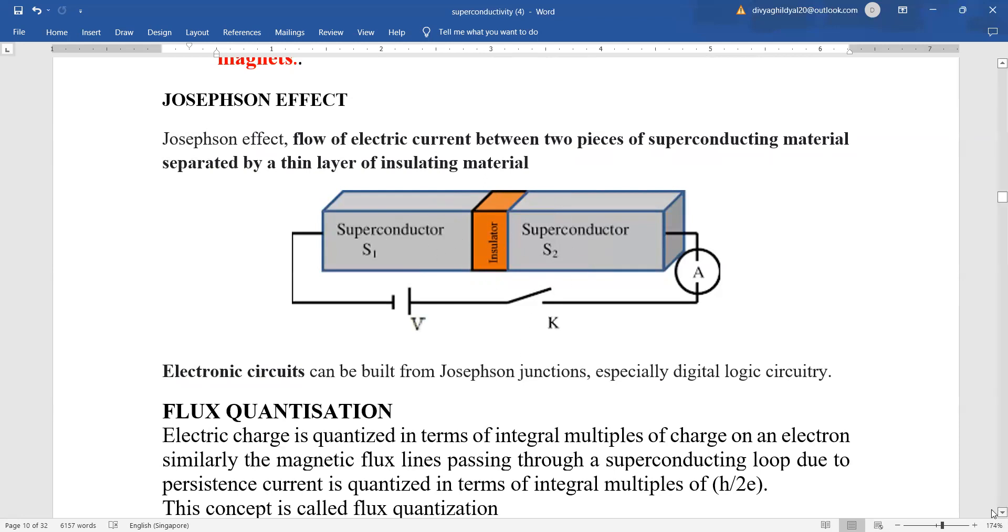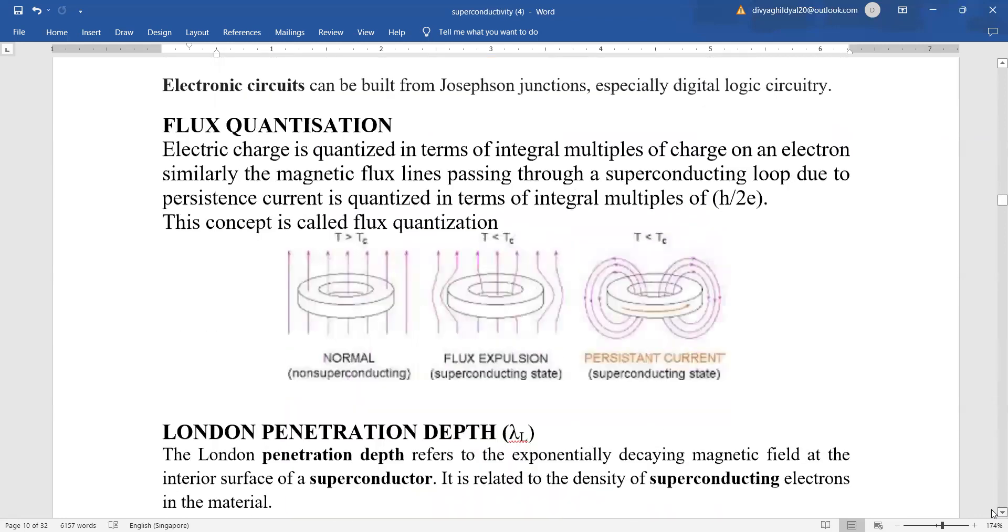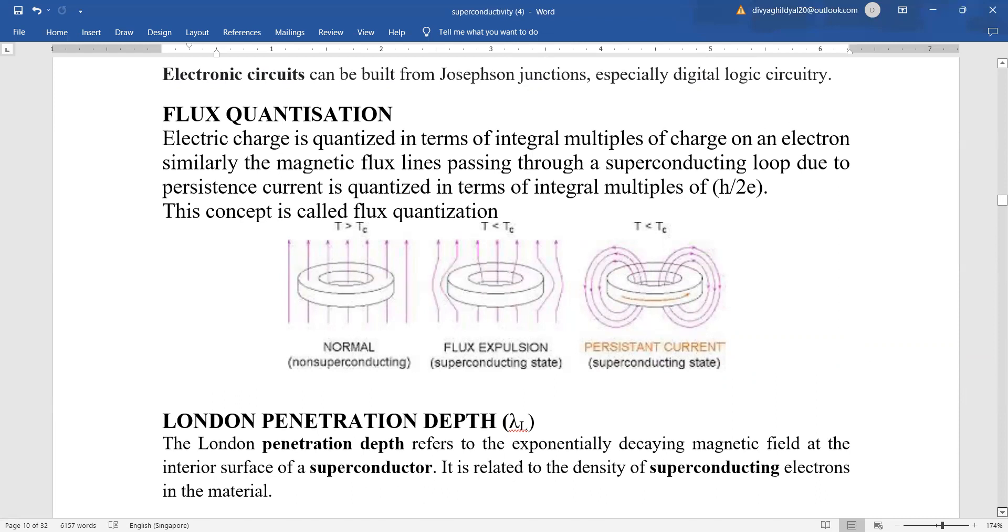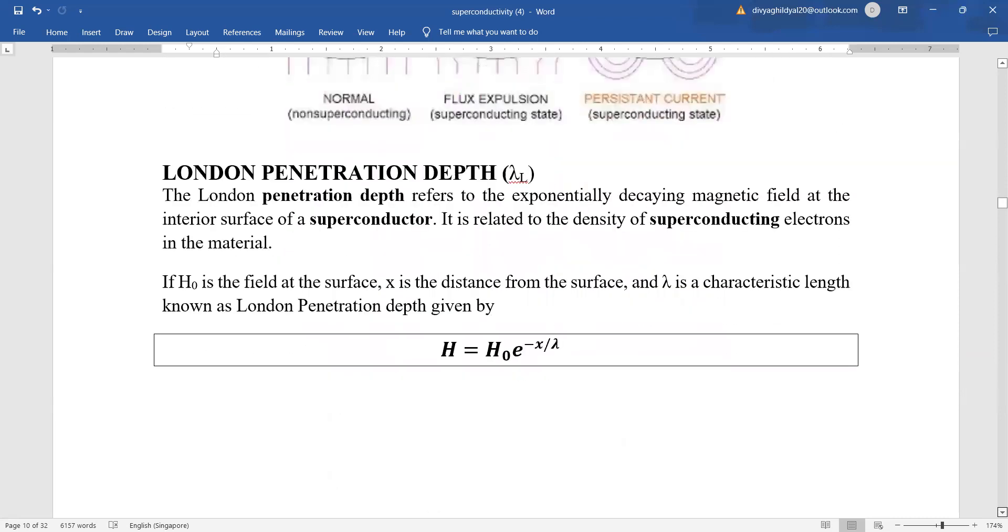Flux quantization. Quantizing means that it occurs in multiples. You remember charge is quantized. Q is equal to N E. That means it is a multiple of electronic charge, integral multiples of charge on an electron. In the very same manner, magnetic flux lines which pass through a superconducting loop due to persistent current are quantized. We call this property as flux quantization.